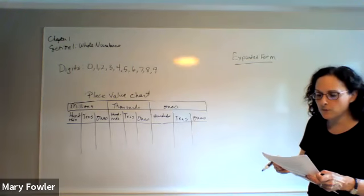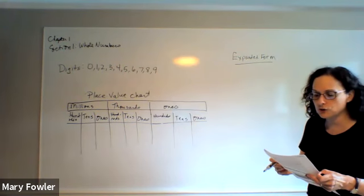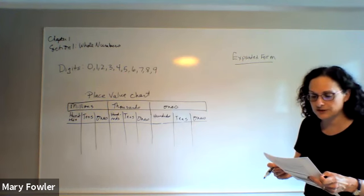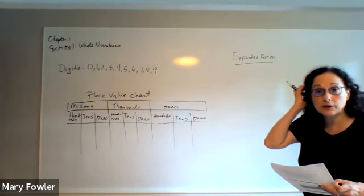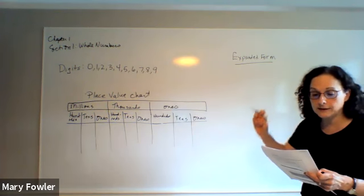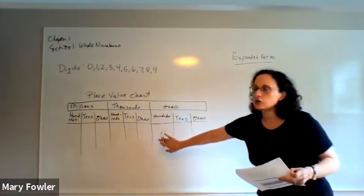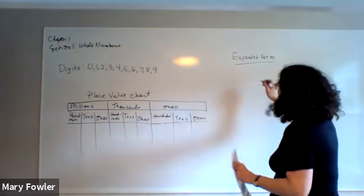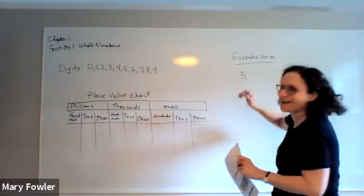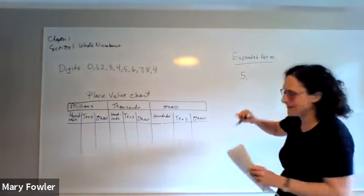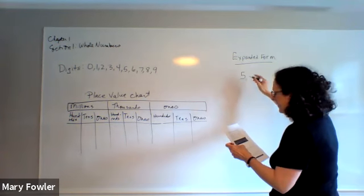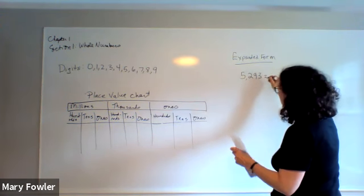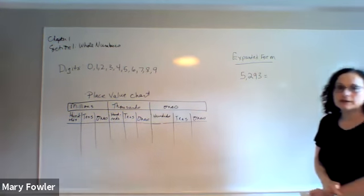Okay, so expanded form of a number can be written using the number and the place values of its digits. I'm going to give you a number and then we'll write it in expanded form and also put it over here on our place value chart. So the number I'm going to play with, coming from the notes from the PowerPoint from MyMathLab, is 5,293.